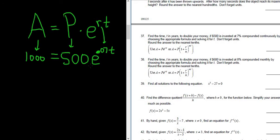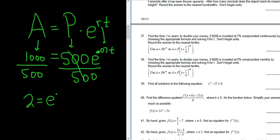Alright, we have to find t, so we have to get the e by itself first, the exponential part. So we divide both sides by 500. These cancel, so we get 2 equals e to the 0.07t.